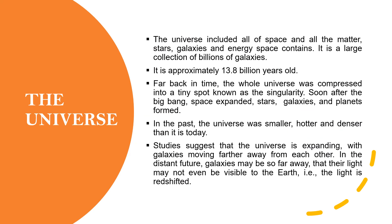The universe is a large collection of billions of galaxies. Our universe includes all of the space, matter, stars, galaxies, and also the energy that space contains. The age of the universe is approximately 13.8 billion years old. Far back in time, the whole universe was compressed into a tiny spot called the singularity, and after the Big Bang, space expanded and our stars, galaxies, and planets formed. In the past, the universe was smaller, hotter, and denser than it is today.